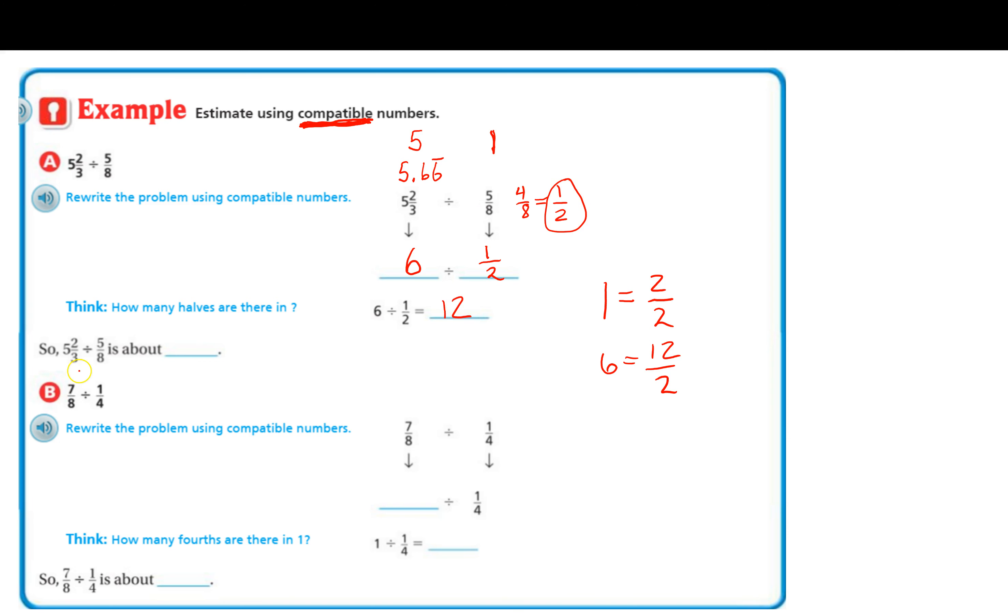So that's going to give you twelve. Okay, so 5 and 2/3 divided by 5/8 is about twelve.